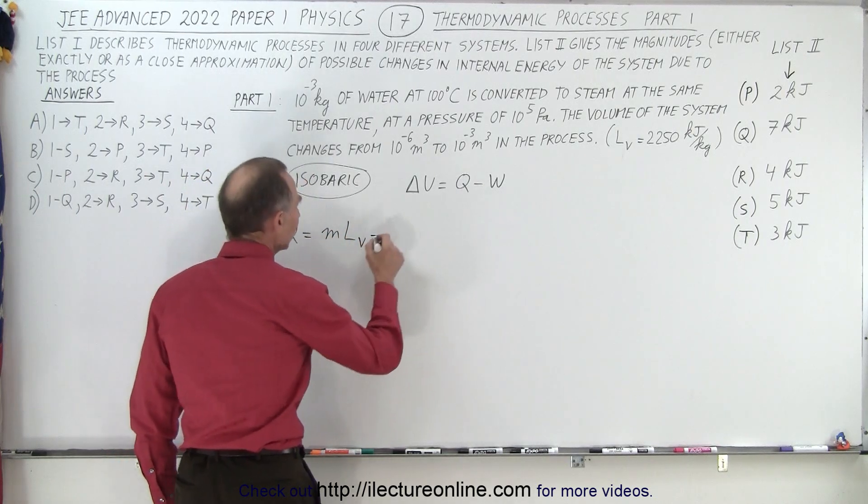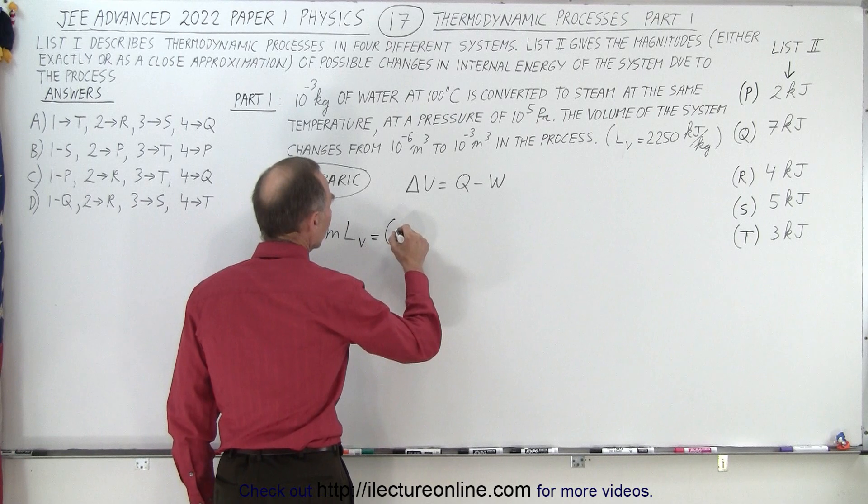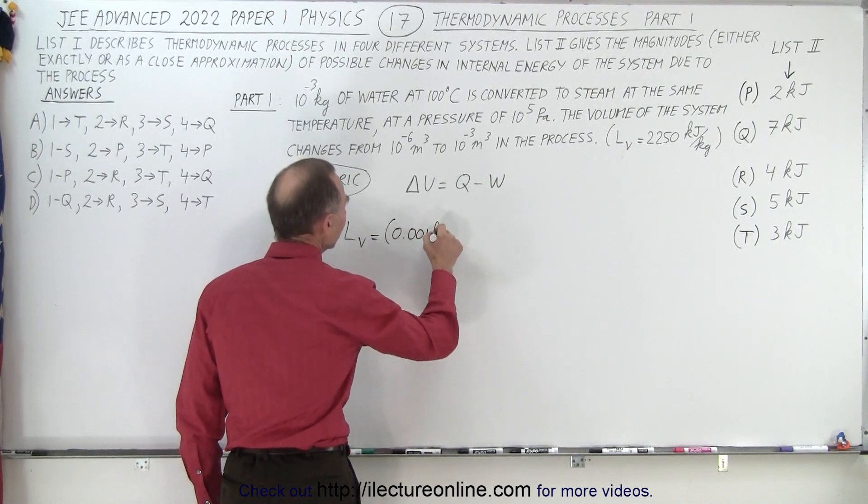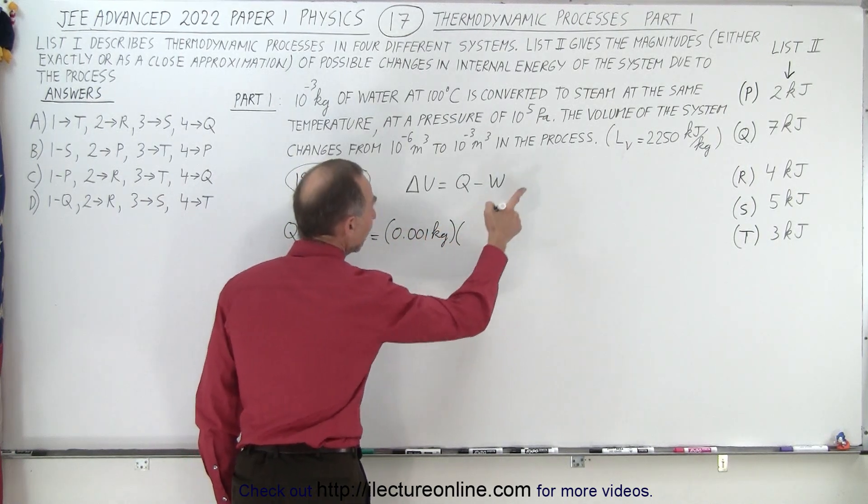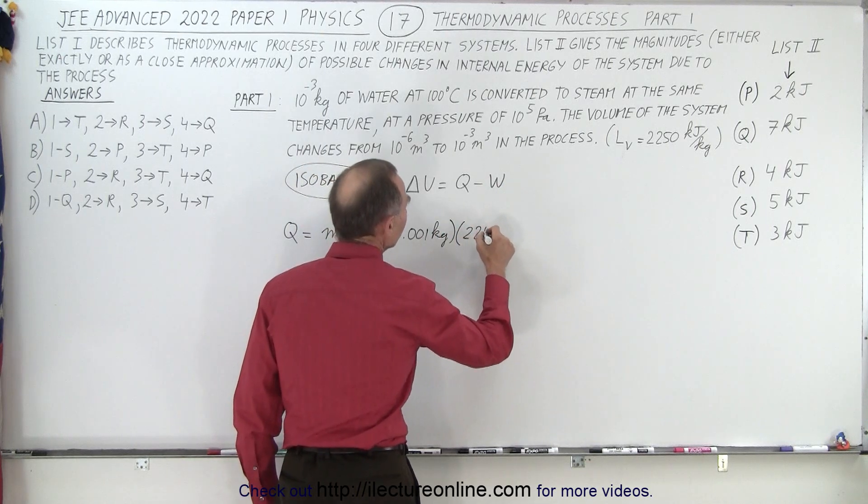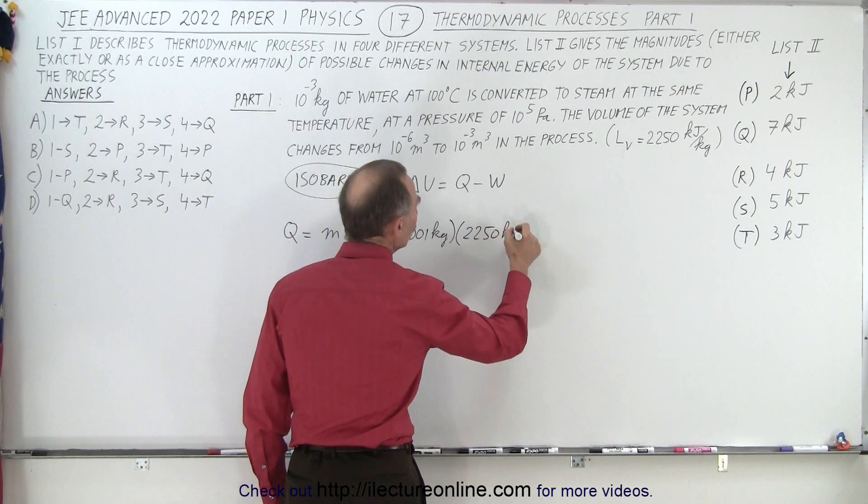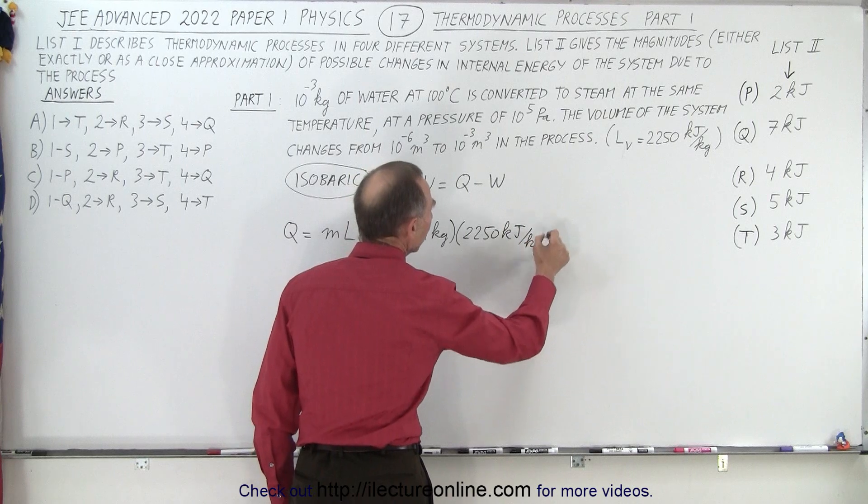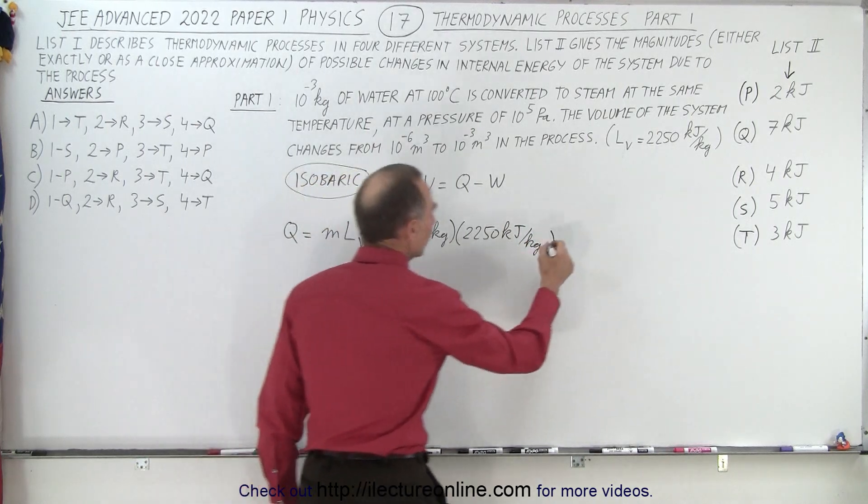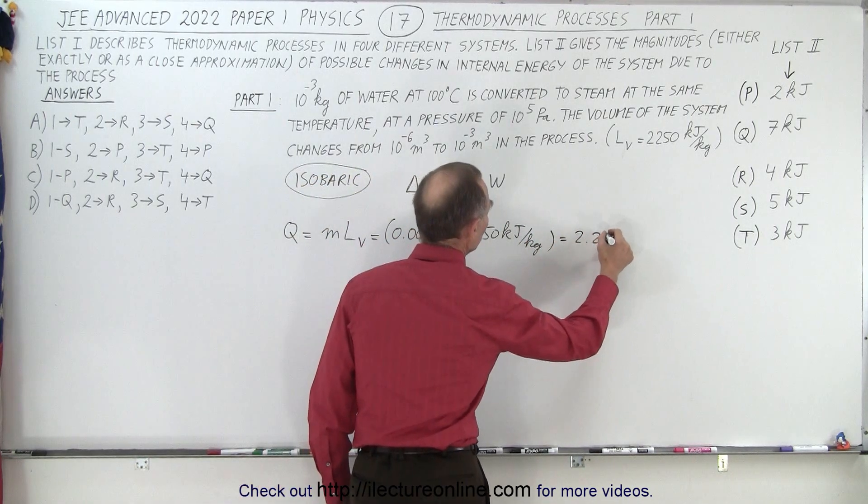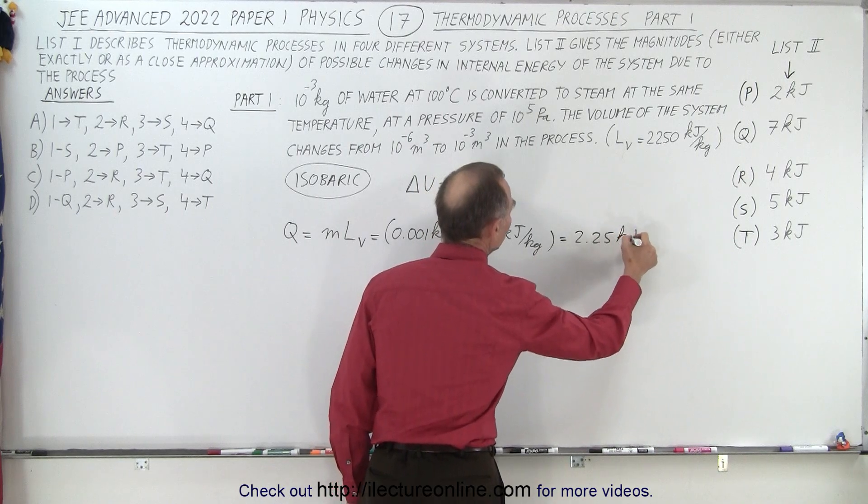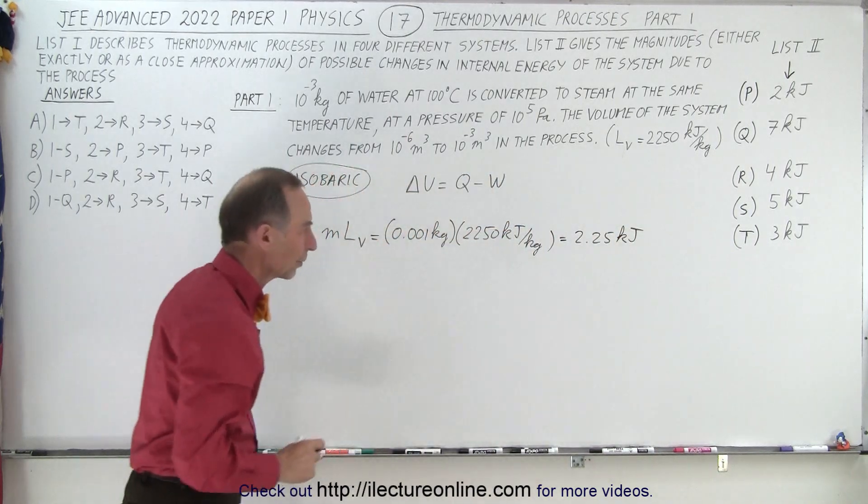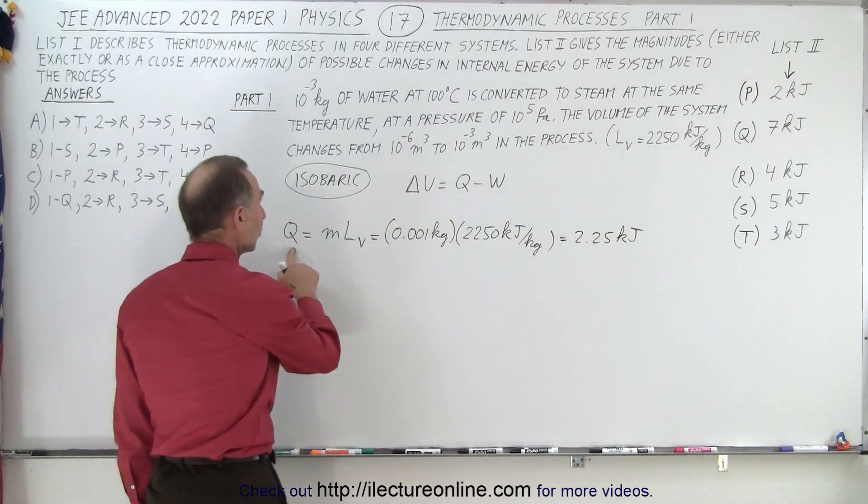In this case, that's 0.001 kilogram multiplied by 2250 kilojoules per kilogram. So this equals 2.25 kilojoules because the kilograms cancel out. That is the heat added to the system.